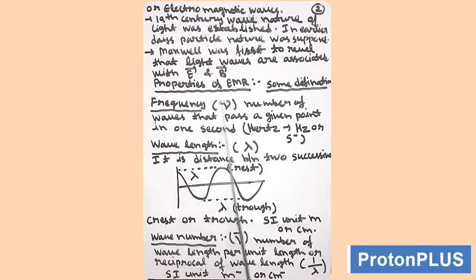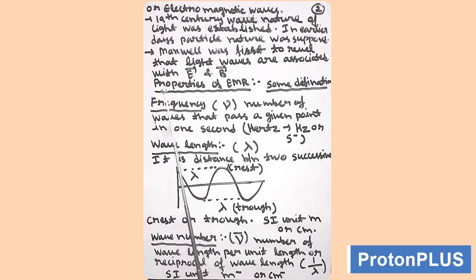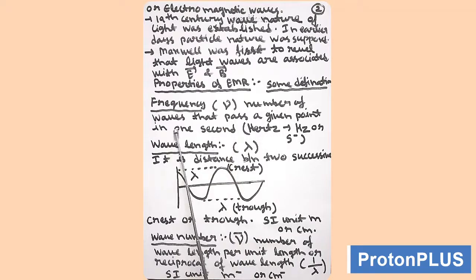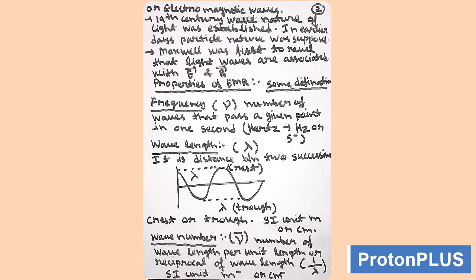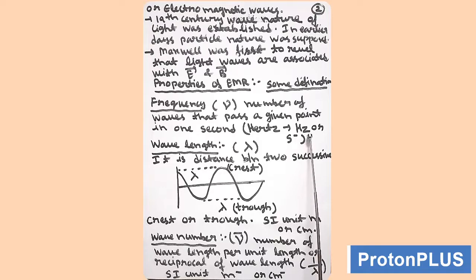We will take properties of electromagnetic radiation. Before we start for the properties, we will take some definitions used while defining the properties. First is frequency, represented by nu. It is the number of waves that pass a given point in one second — number of waves passing through a point per second. The unit is hertz, that is Hz, or second inverse.